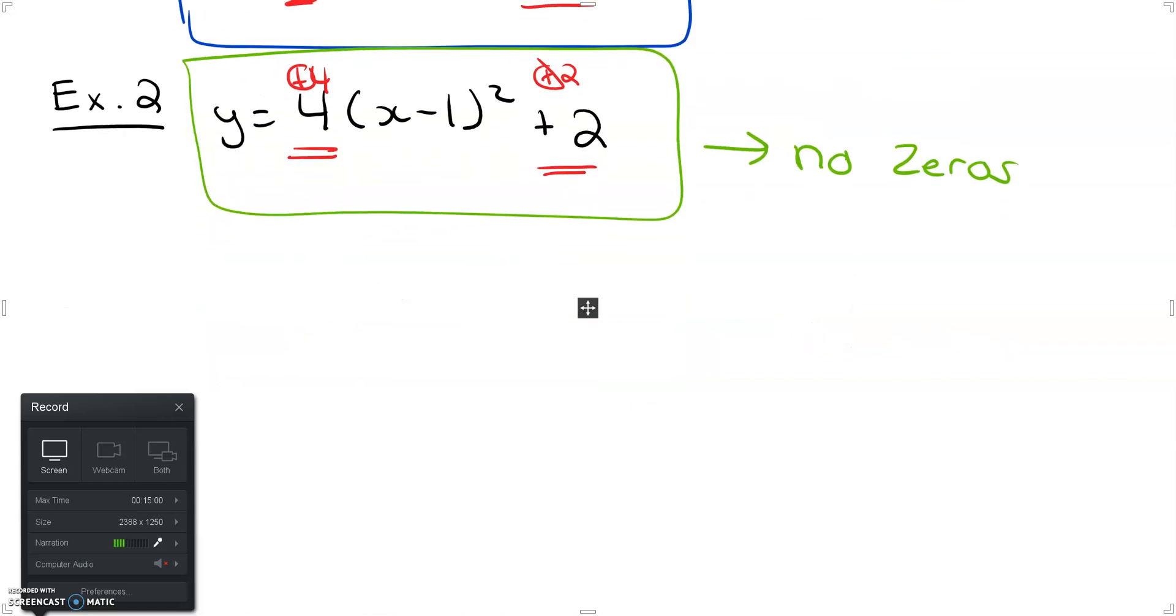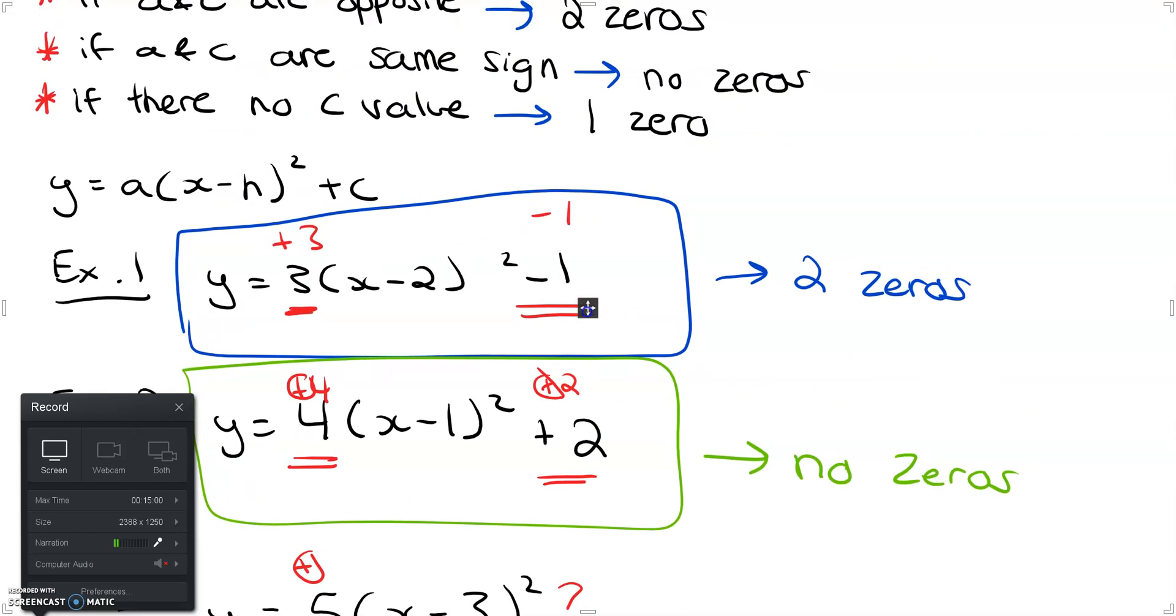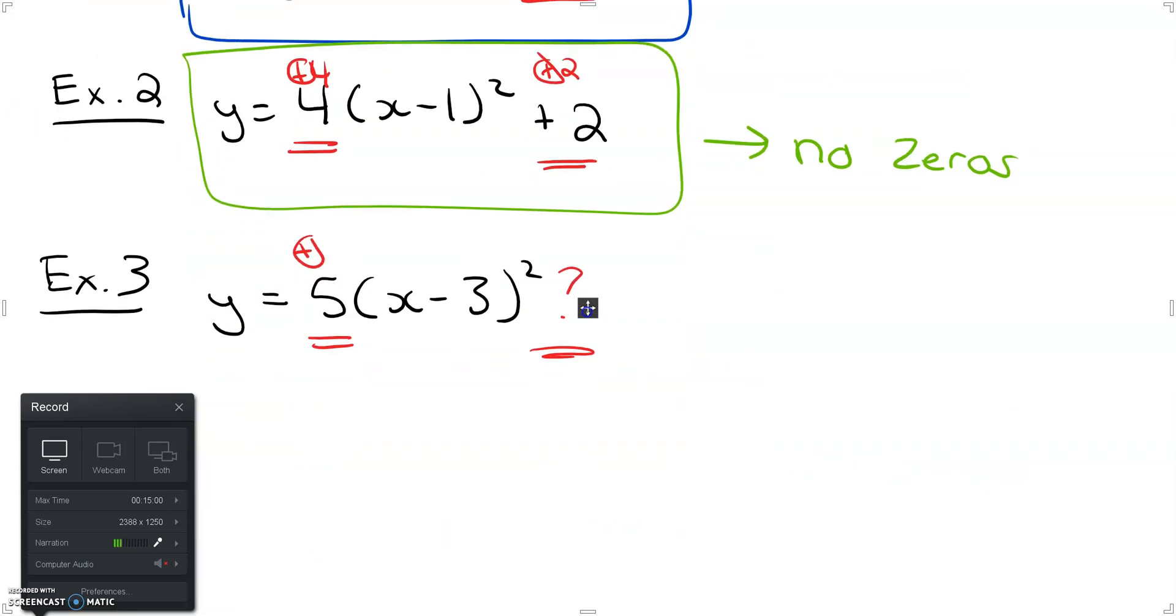All right let's do one final example, example 3. Say I have y is equal to 5 times x minus 3 squared. If I look here I have an a value and it is positive but I don't have a c value, there is no c value here. So again if I scroll up and I see there are no c values that's our case 3 right here, so based on this I can conclude that since there's no c value this has to have one zero.